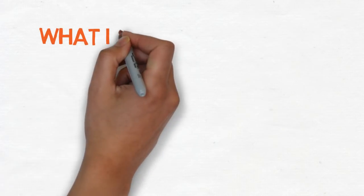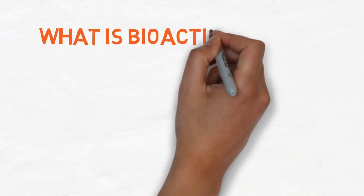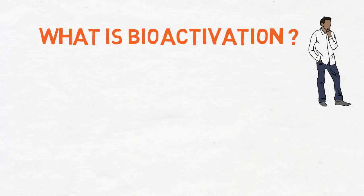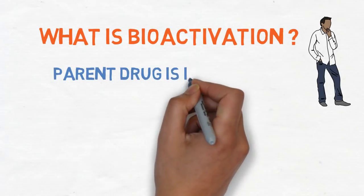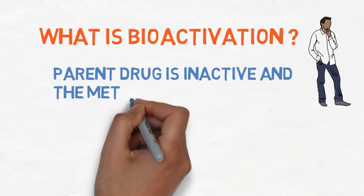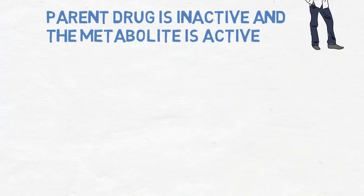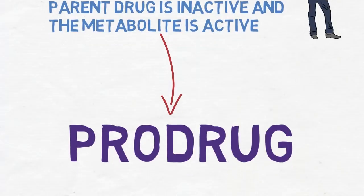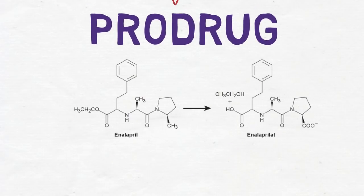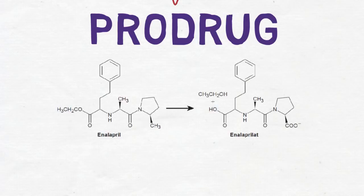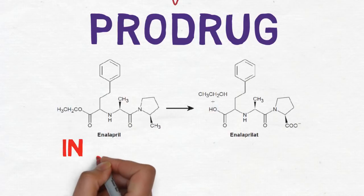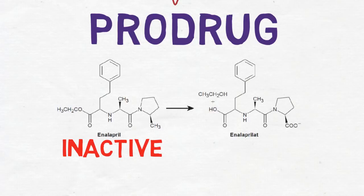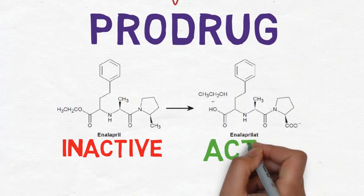However, in some cases we notice a result known as bioactivation, where the parent drug is inactive and the metabolite would have pharmacological activity. In this case, the inactive parent drug is called a prodrug. An example of a prodrug is enalapril, which has no activity as an antihypertensive agent, but upon hydrolysis it becomes enalaprilat, which is a potent antihypertensive drug.